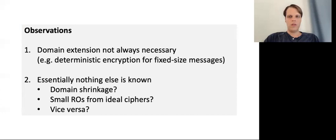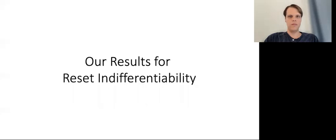Another question is whether we can build small random oracles from ideal ciphers. In particular, is the sponge construction for sufficiently small messages reset indifferentiable? This wouldn't contradict the domain extension impossibility since the domain remains small. And finally, what about the other direction — can we build ideal ciphers from random oracles? This leads us to our work, where we give several new results for reset indifferentiability.